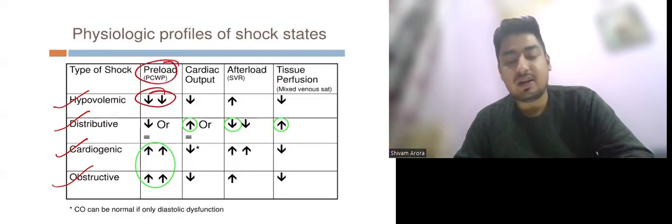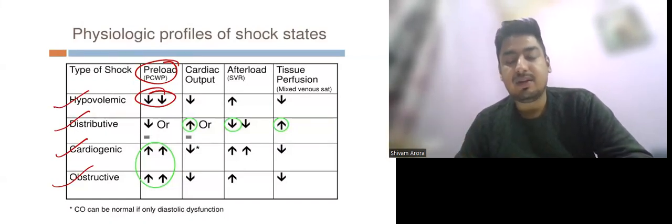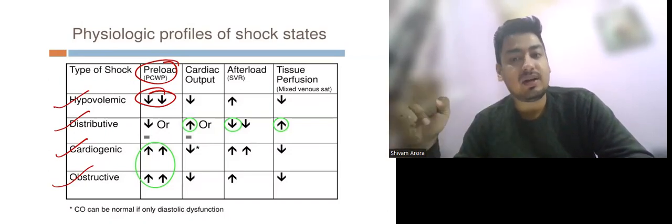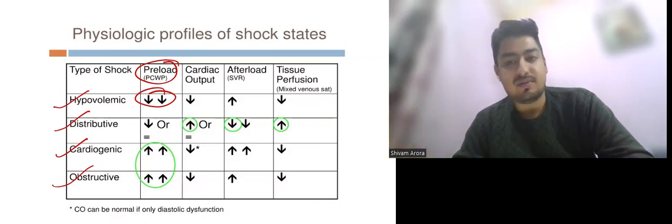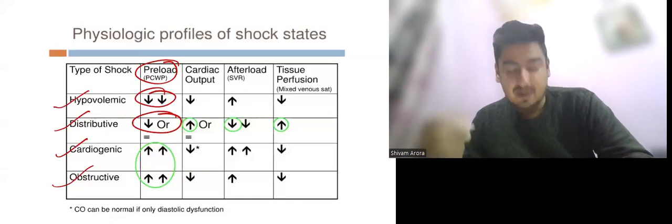In hypovolemic shock, preload decreases because there is less fluid in the body. Preload is the amount of blood or fluid coming to the heart, and PCWP is the measure of preload. In distributive shock, preload is decreased or can be normal.